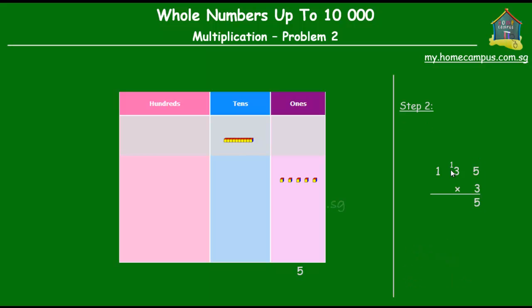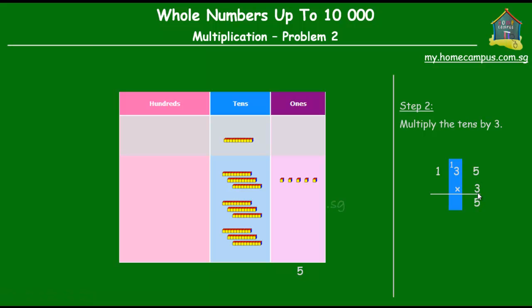The next step is to multiply the tens by 3. In the number 135, there are 3 tens. So one set of 3 tens in the place value chart. We multiply this one set of 3 tens by 3, and that gives us 3 sets of 3 tens, which is equal to 9 tens. We have 1 ten that we got from regrouping in the previous step and 9 tens from multiplying the 3 tens by 3. So altogether we have 1 plus 9, which is equal to 10 tens.